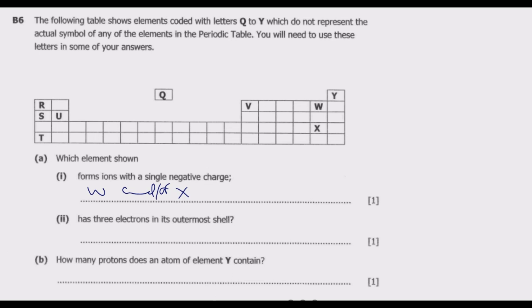Then part (ii): has three electrons in its outermost shell. So this is a group 3 element or a transition element. So what we have in this case is group 1, group 2, then this is group 3. So group 3 is basically V.